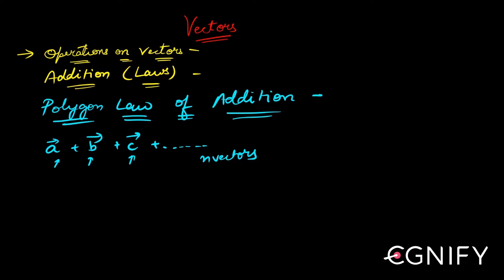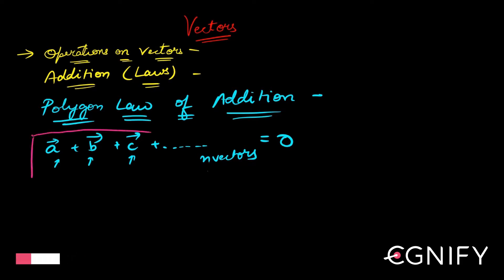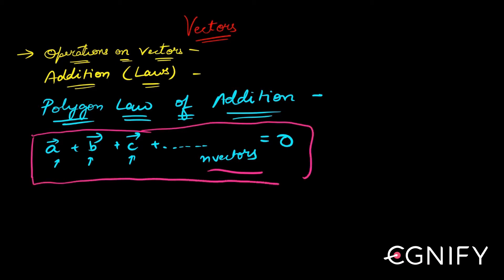If their sum comes to be zero — and remember, it's a vectorial sum — you're taking the vectorial sum of n vectors, and if these vectors vectorially add up to zero, then something specific will happen.